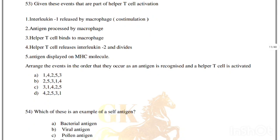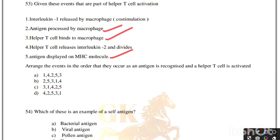Given events that are part of T helper cell activation, arrange them in the correct order: antigen processed by macrophage; antigen displayed on MHC molecule; helper T cells bind to macrophage; interleukin-1 released by macrophage; helper T cells release interleukin-2 and divide. Correct order is option B: 2, 5, 3, 1, 4.